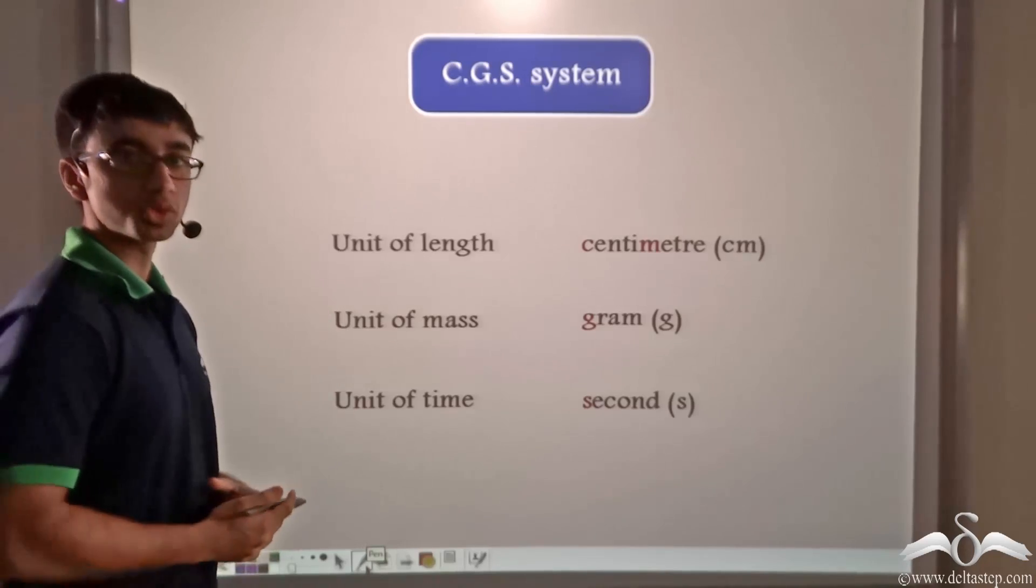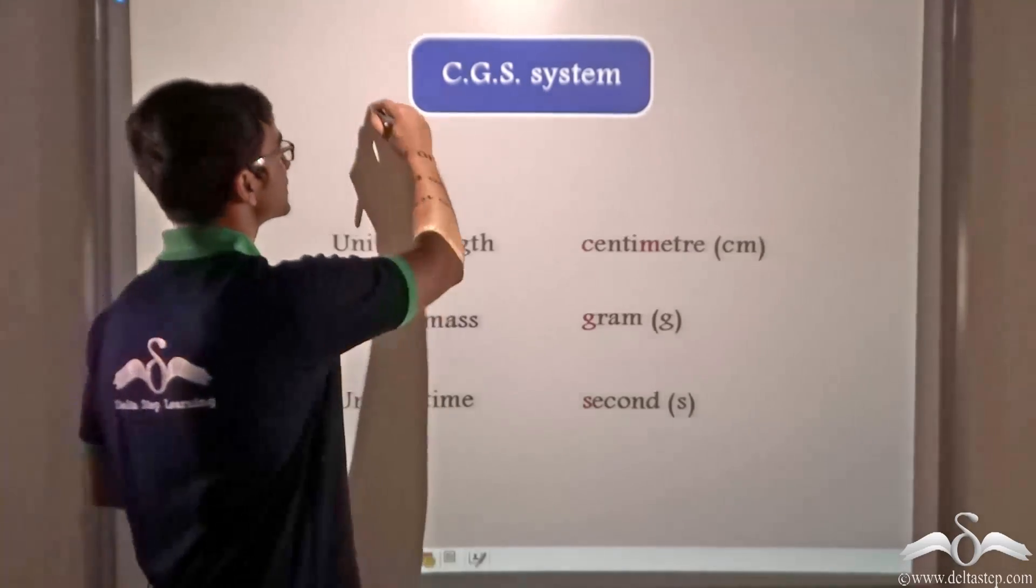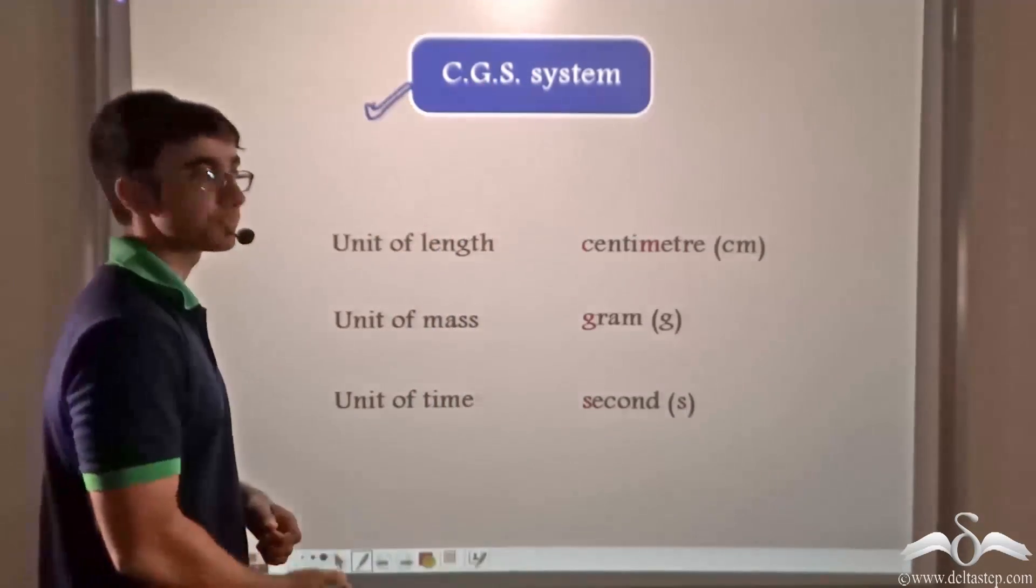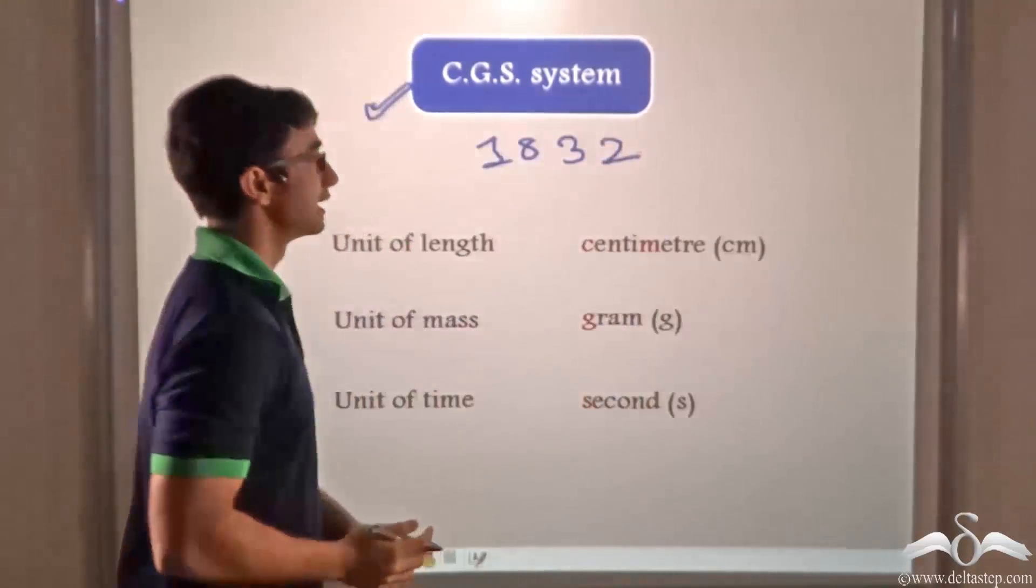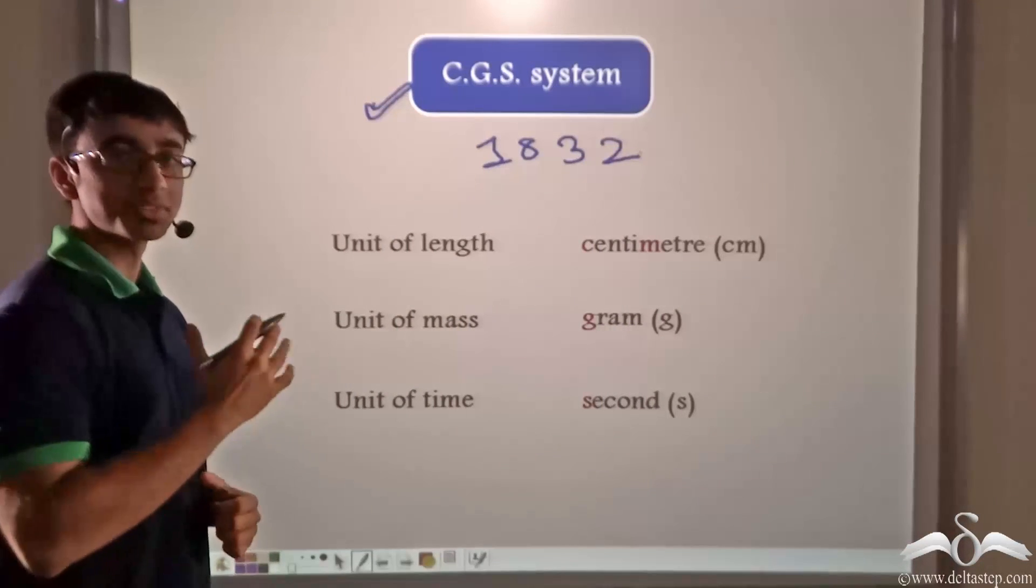Now one of the first and foremost standard system of units was the CGS system, which dates back to around 1832. Now in 1832, a German scientist, Carl Friedrich Gauss proposed that millimeter be used for measuring length,